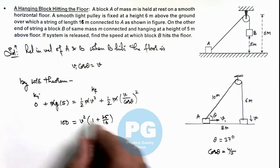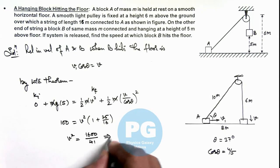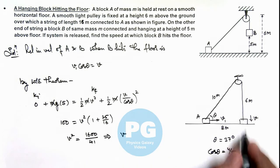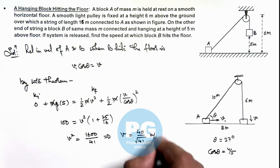So here we can write v squared equals 1600 divided by 41. This implies the value of speed of block B with which it'll hit the floor is 40 by root 41 meters per second, and that'll be the final result of this problem.